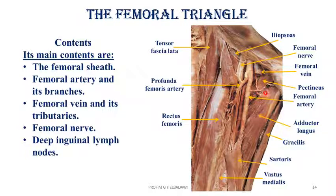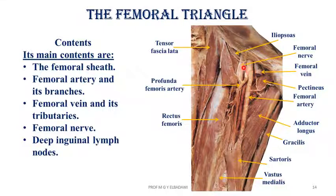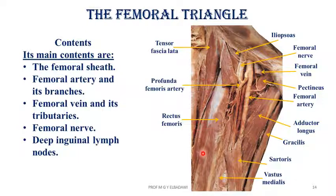In this cadaveric specimen, the sartorius is reflected to show the femoral artery, femoral vein, and femoral nerve. From lateral to medial: the most lateral is the femoral nerve, and the most medial is the femoral vein. The profunda femoris artery is visible here, along with the tensor fasciae latae ending in the iliotibial tract and the quadriceps muscle. The floor of the triangle shows the adductor longus and the vessels in front of the pectineus.